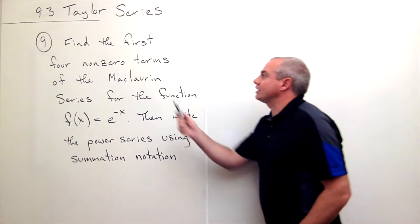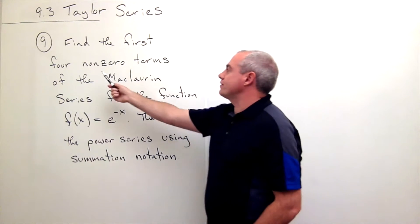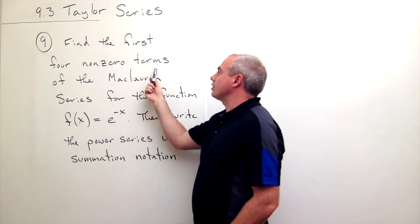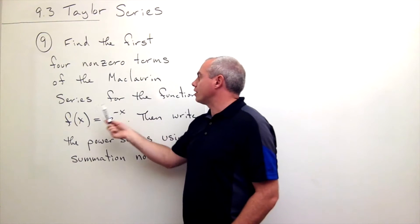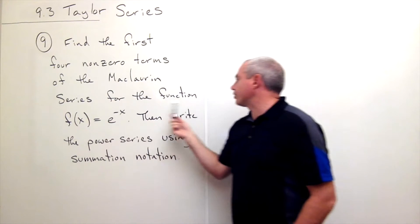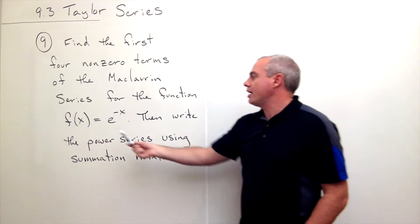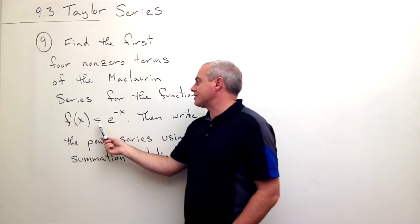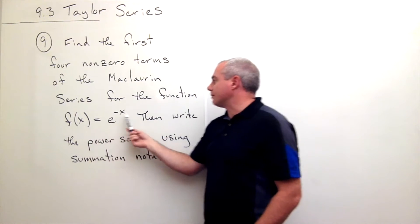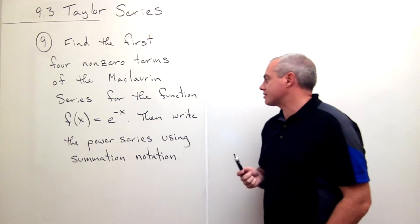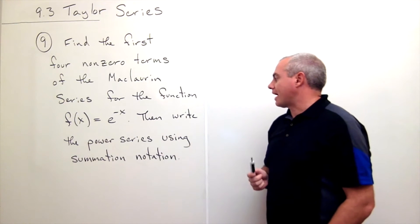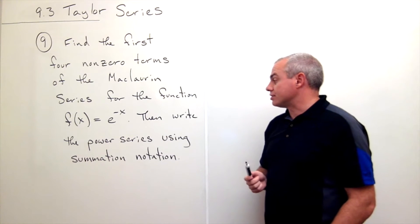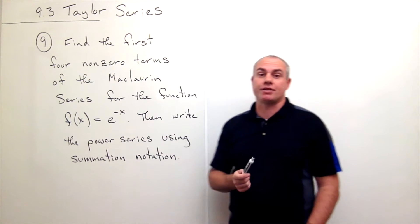In problem nine we'd like to find the first four non-zero terms of the Maclaurin series for the function f of x is equal to e to the minus x. Then we'd like to write the power series using summation notation.